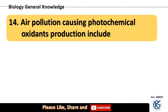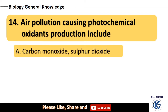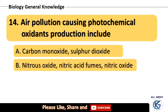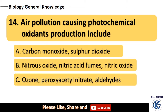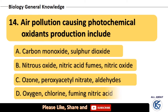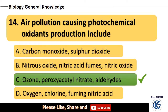Air pollution causing photochemical oxidants production includes which of the following — carbon monoxide, sulfur dioxide, nitrous oxide, nitric oxide, ozone, peroxyacetyl nitrate, aldehyde, oxygen, chlorine, or fuming nitric acid? The right answer is ozone, peroxyacetyl nitrate, and aldehydes.